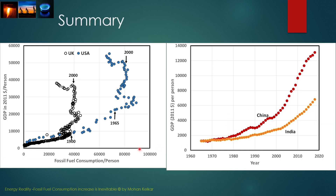The contrast between developing and developed countries is very clear in terms of which stage of fossil fuel consumption each is in. In the developed countries, we are in the efficiency period, where fossil fuel consumption continues to decline as more efficiency is added to the way we live. Whereas in China and India, we are still in the infrastructure period, where fossil fuel consumption per person continues to increase as the living standards of the average citizen improve. Unfortunately, there are more people who live in developing countries than developed countries, which means that for the next several decades, it is impossible to believe that fossil fuel consumption will decline.